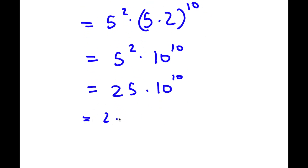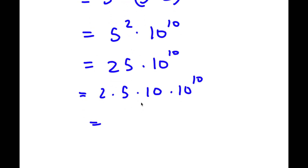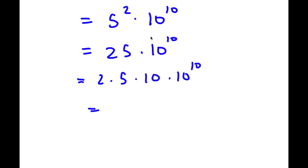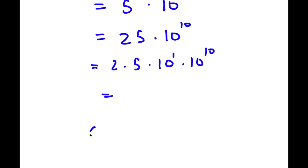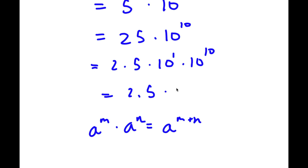So now I have 25 times 10 to the power of 10. And 25 is the same thing as 2.5 times 10. So I have 2.5 times 10 times 10 to the power of 10. And 10 is the same thing as 10 to the power of 1. Using the rule a^m × a^n = a^(m+n), 10 to the power of 1 times 10 to the power of 10 equals 10 to the power of 11. So I have 2.5 times 10 to the power of 11 — that's my answer in scientific notation form.